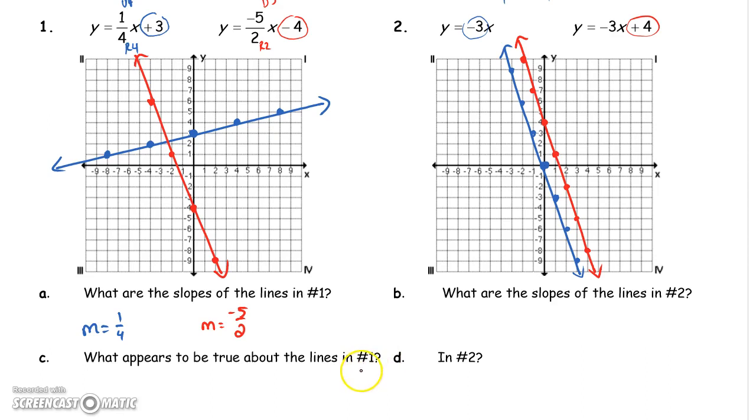What appears to be true about the lines? We're going to answer that in just a second. In number 2, the slope of the line in blue was negative 3.